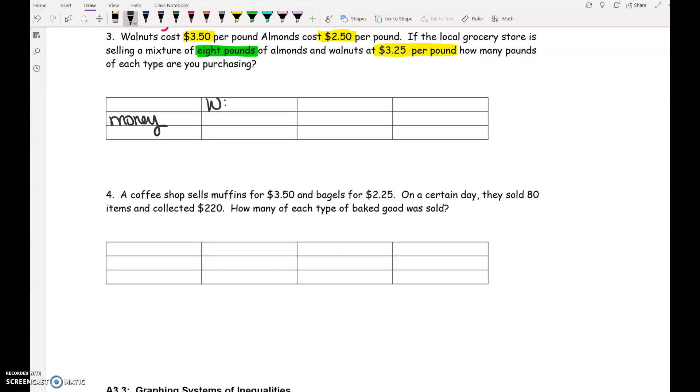Okay, walnuts are $3.50 per pound. Anytime you see the word per, that's going to mean multiply. So $3.50 times the number of pounds of walnuts. Oops, I was going to use W, not X. Then almonds are $2.50 per pound of almonds. So $2.50 times the number of pounds of almonds, and that needs to equal the total cost. Does anybody see a problem with the total cost that we have in this problem?